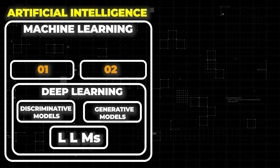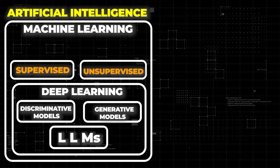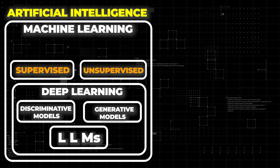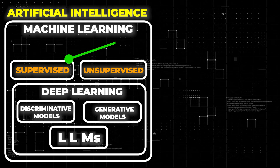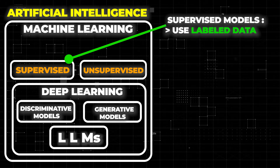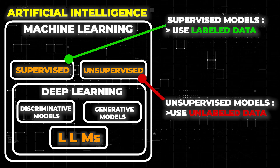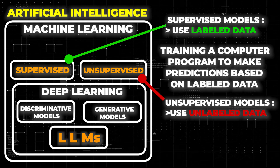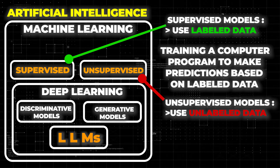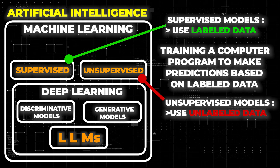There exist two main categories of machine learning models: supervised and unsupervised learning models. The primary distinction between the two lies in the fact that supervised models rely on labeled data, whereas unsupervised models operate with unlabeled data. Supervised learning is about training a computer program to make predictions based on labeled data. The program is trained on data that already has known relationships between different variables. After training, the program can then use its knowledge to make predictions on new data.